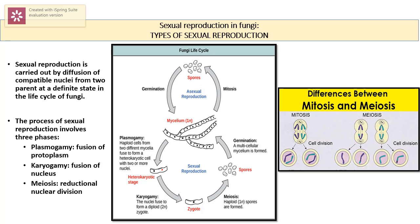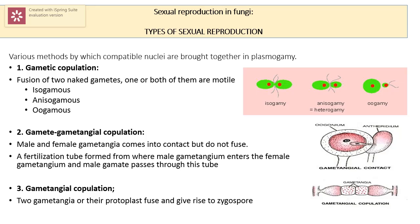Through meiosis, haploid spores are formed. These haploid spores contain the genes of both parents. This completes the cycle of sexual reproduction in fungi. Plasmogamy and karyogamy may occur in a number of different ways in different taxonomic groups of fungi.